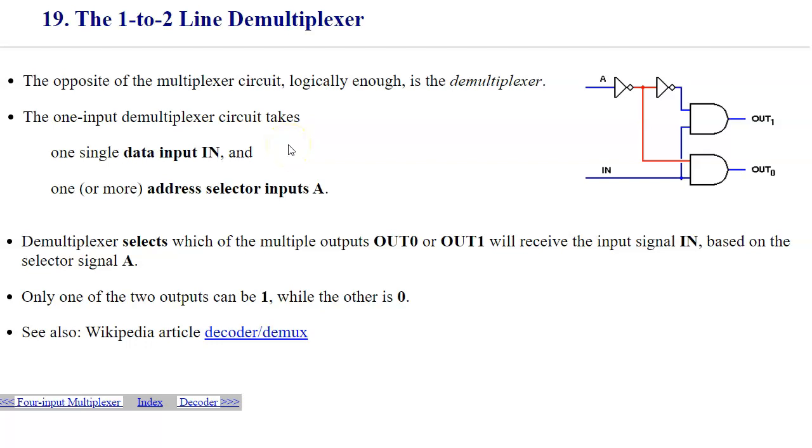Our next device to study is a demultiplexer, which is sort of like a reverse function of a multiplexer. This example demonstrates a 1 to 2 line demultiplexer, and the way it works is again that we have a single address selector which can be 0 or 1.